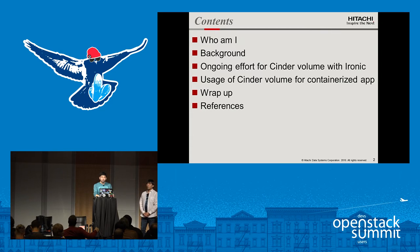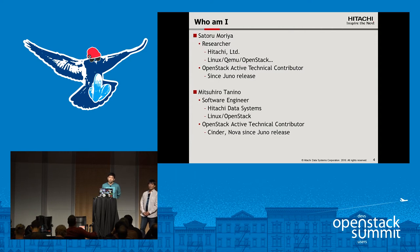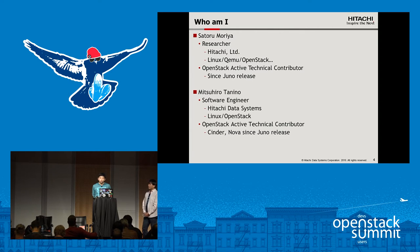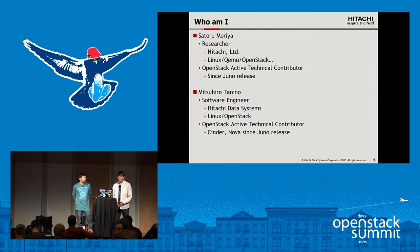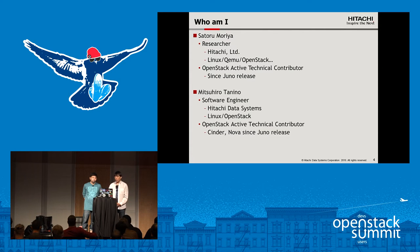Let me introduce myself first. I'm Sator Moria, a researcher working for Hitachi. I contributed to Linux kernel development and KVM in the past, and now I'm an OpenStack ATC, mainly active on the Ironic project. And I'm Mitsuhiro Tanino, working at Hitachi Data Systems. I also contributed to Linux in the past, and I've been contributing to OpenStack since Juno, mainly for the Cinder and Nova community.